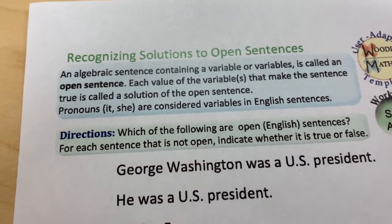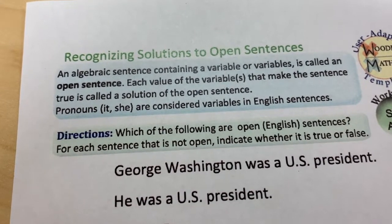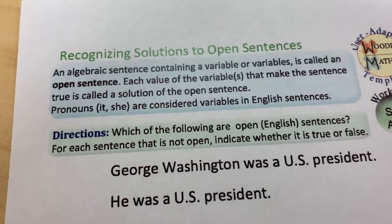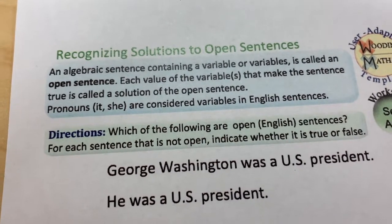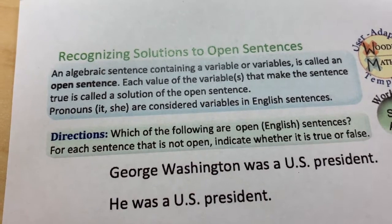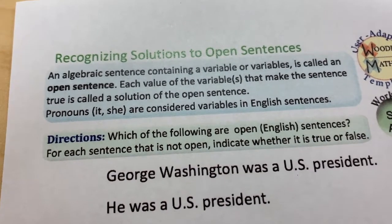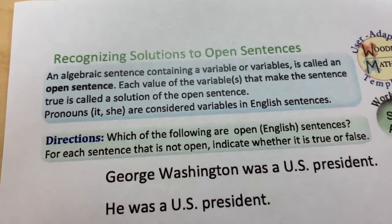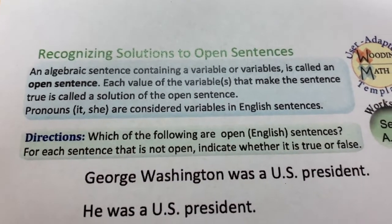Recognizing solutions to open sentences. An algebraic sentence containing a variable or variables is called an open sentence. Each value of the variable that makes the sentence true is called a solution of the open sentence. Pronouns like it or she are considered variables in English sentences.